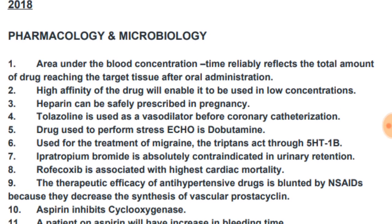Area under the blood concentration-time curve reliably reflects the total amount of drug reaching the target tissue after oral administration. High affinity of the drug will enable it to be used in lower concentration — if the drug has high affinity you can give the dose in minimal concentration.